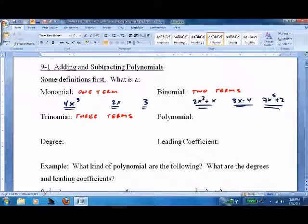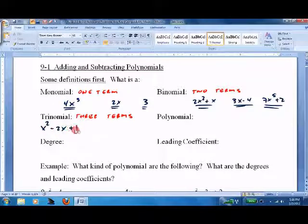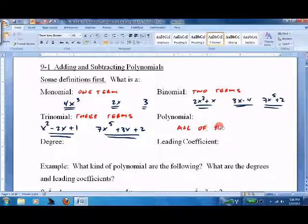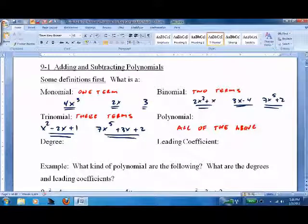Those would all be binomials - two terms. Trinomial is three terms: x squared minus 2x plus 1, or 7x to the fifth plus 3x plus 2. It could be anything as long as it has three terms. And a polynomial? Well, we've just described what polynomials are - they're all of the above: monomial, binomial, trinomial. You could actually have four or five or six terms. But they're all polynomials - anything with an exponent.